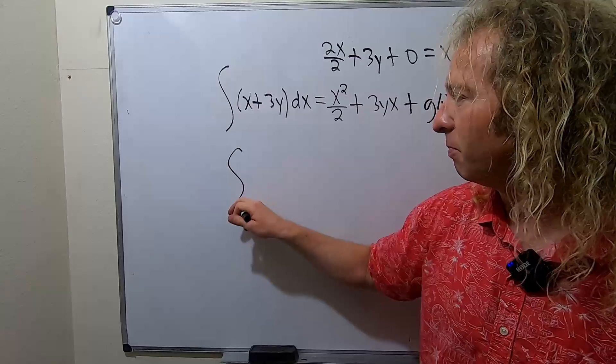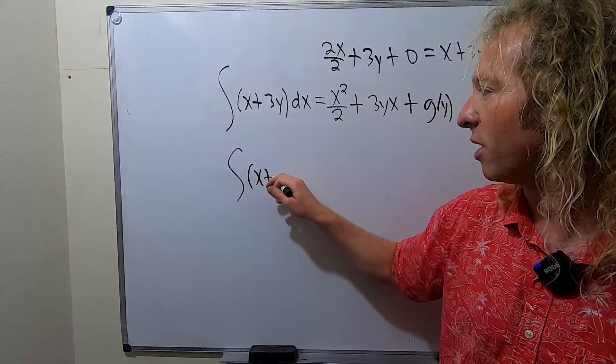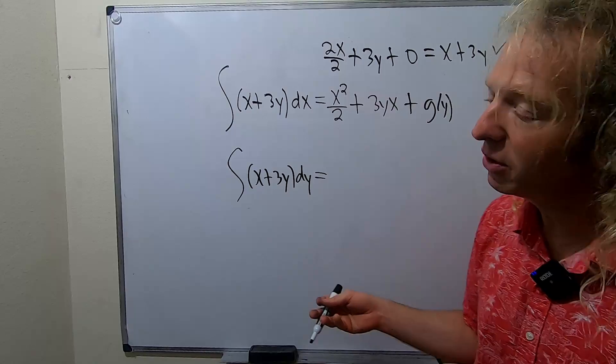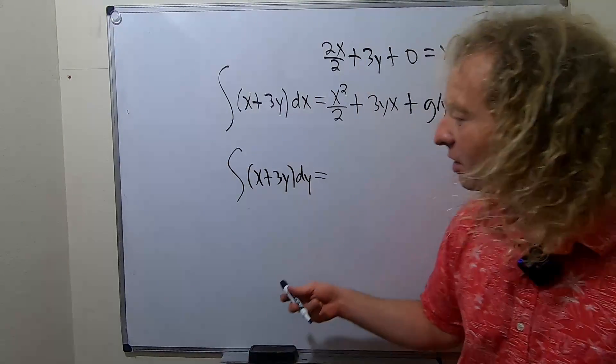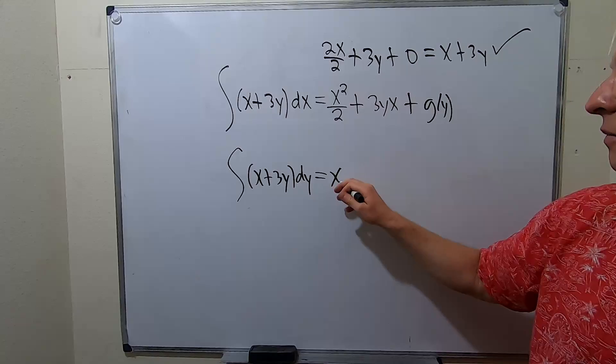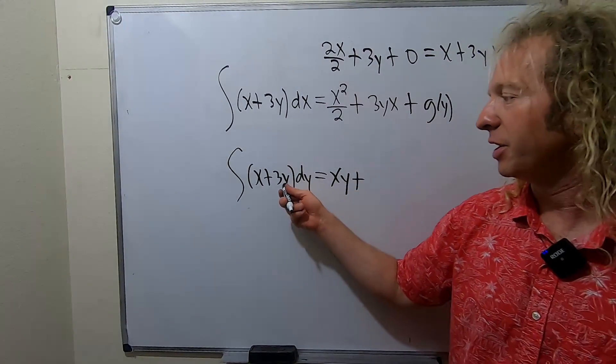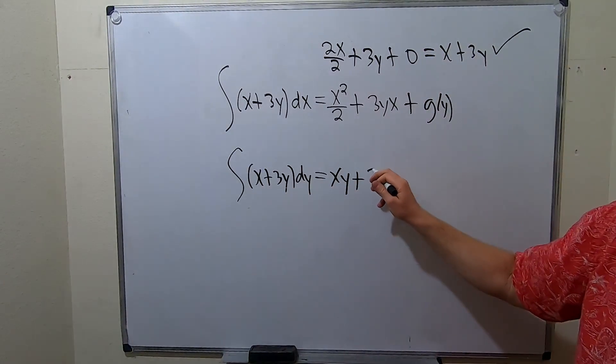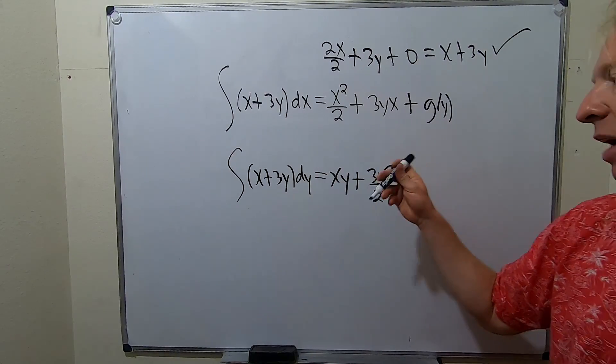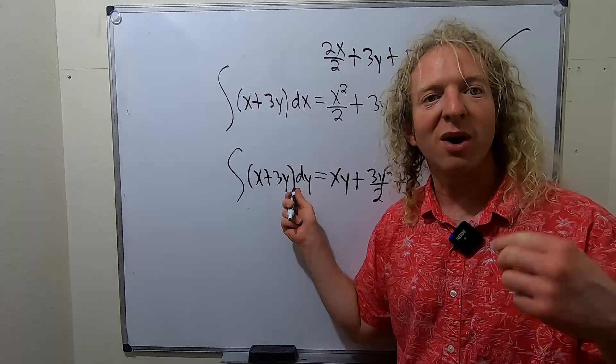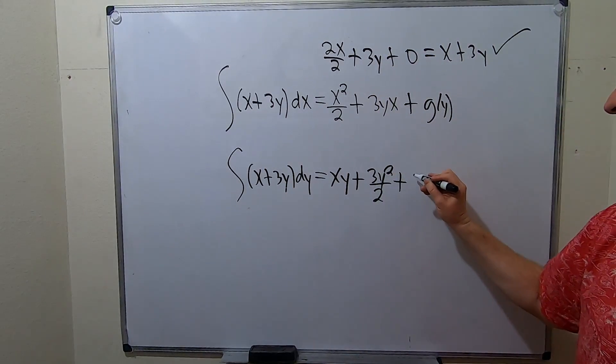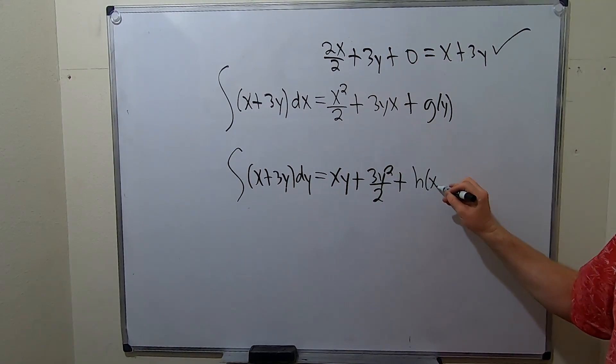Let's do it the other way. Let's do x plus 3y dy. So now we're integrating with respect to y. So in this case, we hold x constant. So we get xy plus... Now we're integrating with respect to y, so it's plus 3y squared over 2 plus... And when you integrate with respect to y, you add an unknown function of the other variable. So plus, let's just call it h of x.